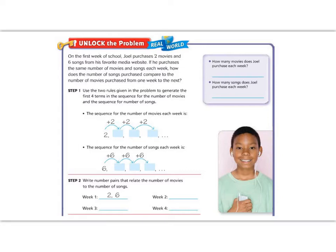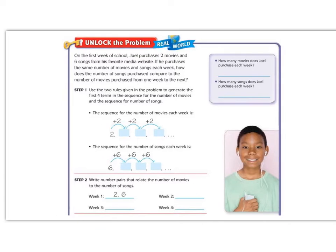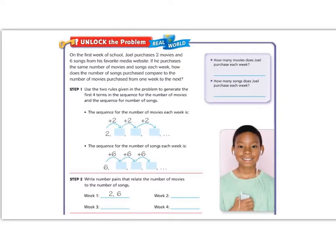The purple box says how many movies does he purchase? Well, it says he purchases two movies. And how many songs does he purchase? He purchases six songs. So that means that every time he makes a purchase, he's always going to buy two movies and six songs. So we know that he's always going to have more songs than he has movies, but it's going to increase every time.